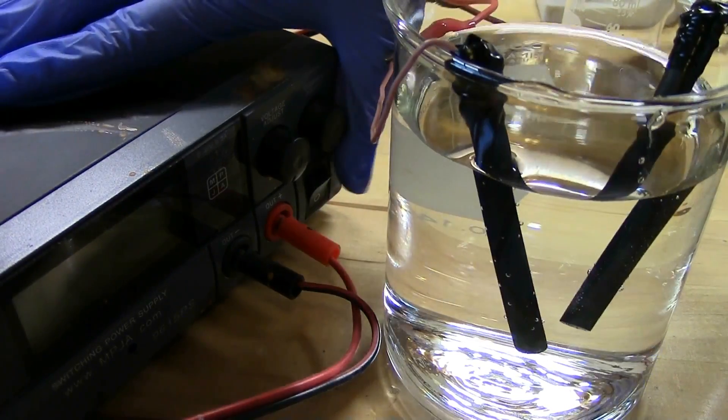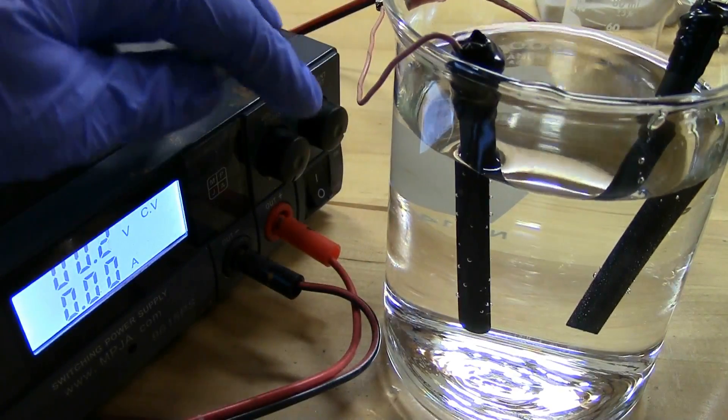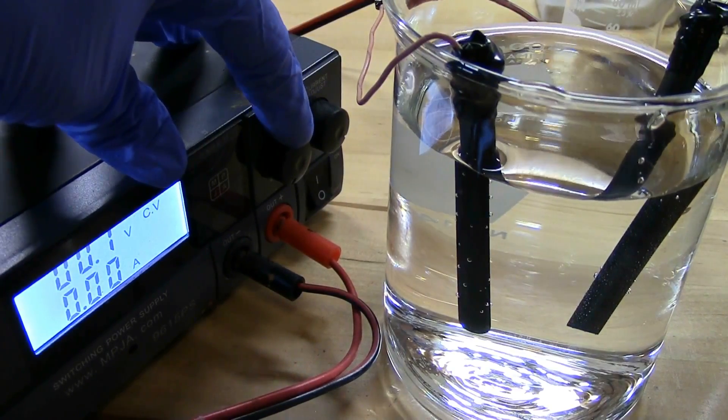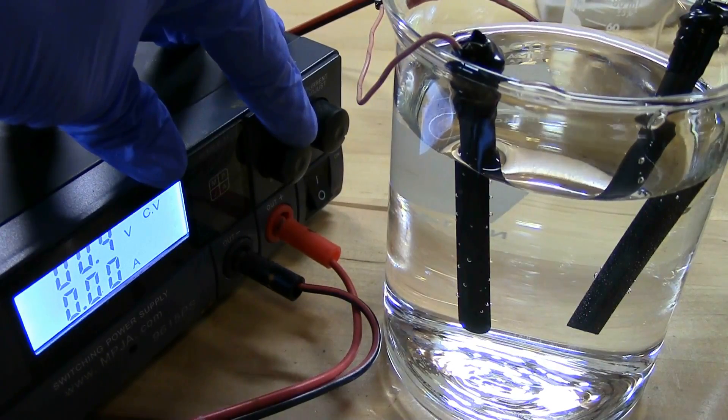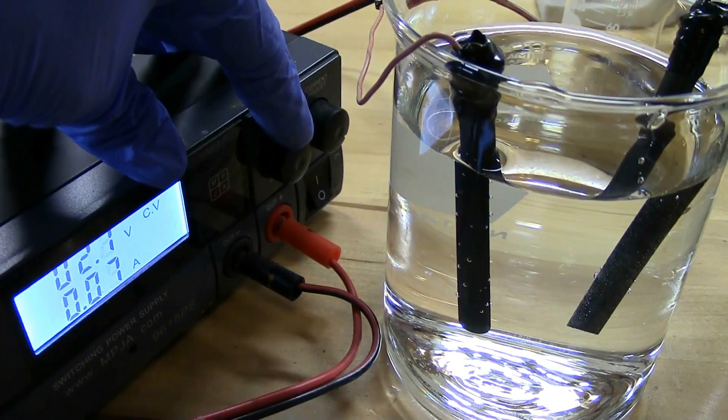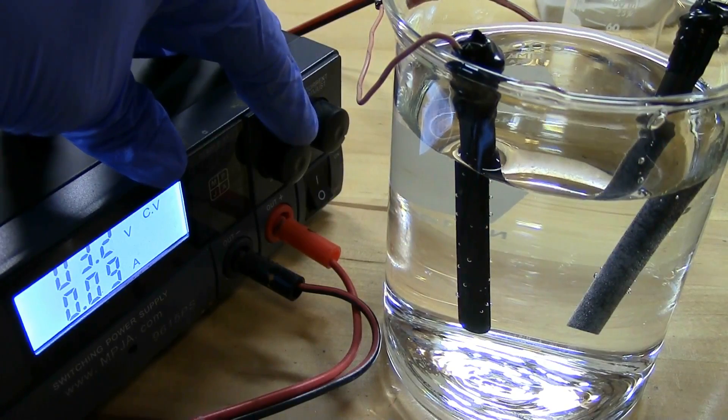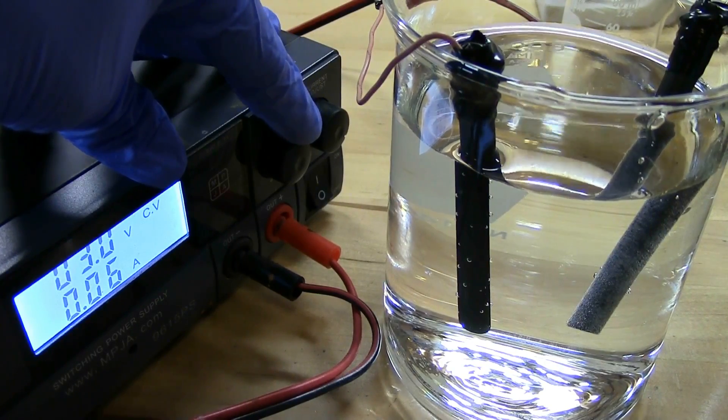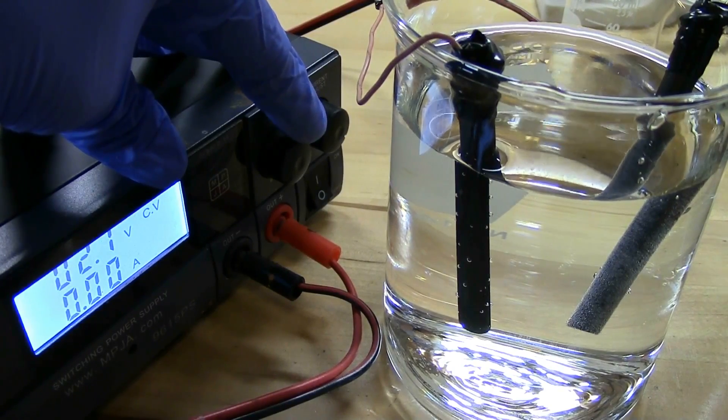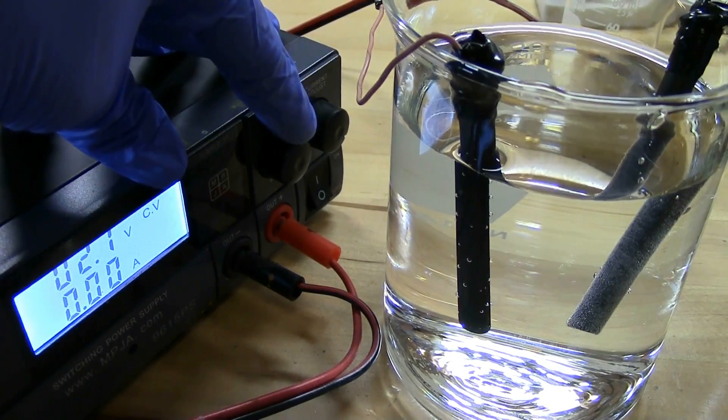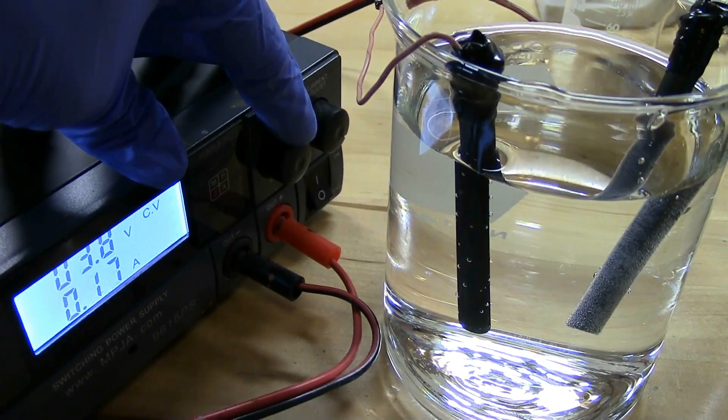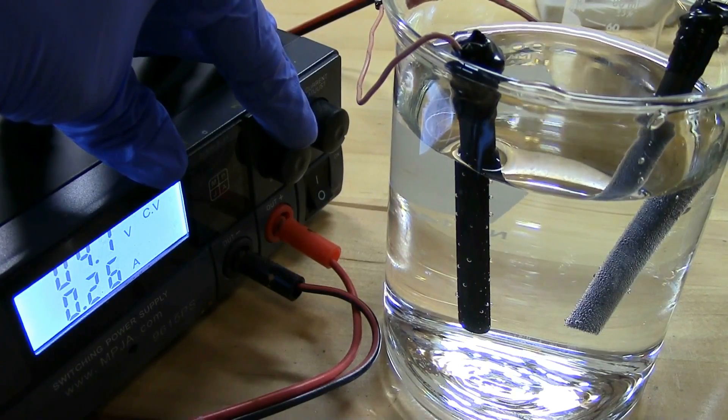Now let's give that another try. Turn the current back on and slowly increase the voltage to see at what point a reaction begins. You can see some bubbles forming on the negative electrode. That was around 2.3 volts - roughly double the theoretical standard voltage. Let's increase the voltage a little more to get a higher reaction speed.